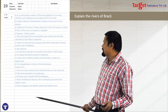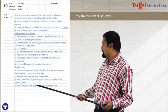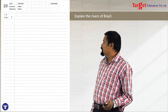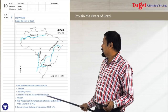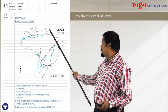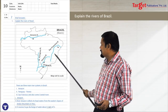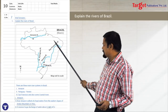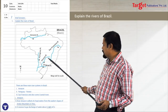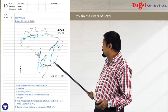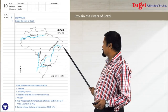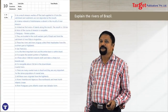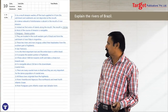So you have to draw the stencil of Brazil, then mark a few important rivers like Amazon, Paraguay, Parana, Uruguay system, and São Francisco. These are the rivers you can show, and then you can start your presentation.